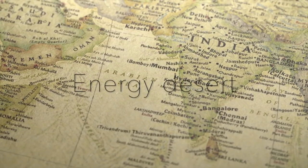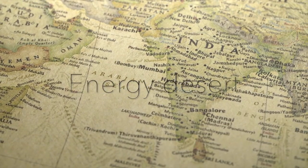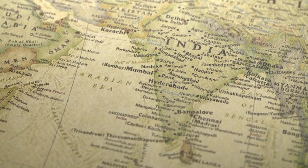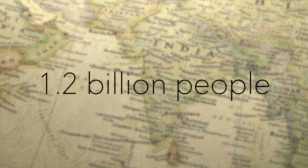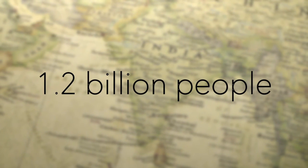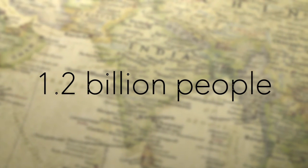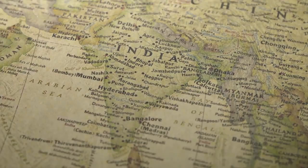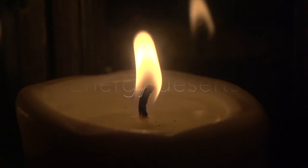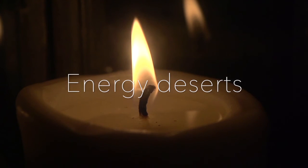The first are the energy deserts, the places where people live without electricity. 1.2 billion people, or one out of six of us, lives in an energy desert. It's the candle's flame or the kerosene lamp that brings light. This is expensive.